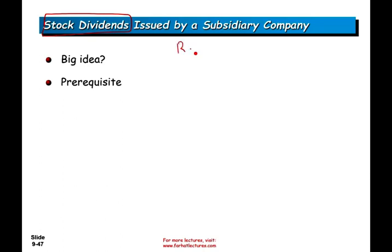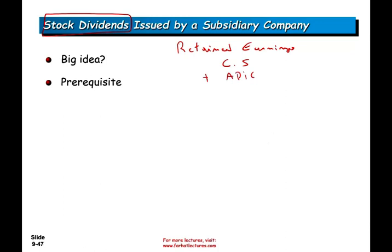So for a stock dividend, when you declare it, you debit retained earnings — you reduce your retained earnings because dividend comes out of retained earnings. You credit, depending on whether it's a small or a large stock dividend, capital stock, or capital stock plus additional paid-in capital. The basic idea: debit retained earnings, credit common stock and credit additional paid-in capital (APIC).